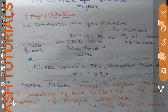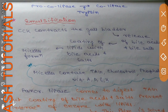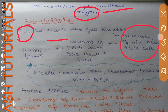Pro-colipase is in inactive form and will be converted into active colipase by the enzyme trypsin. Now, coming to emulsification: cholecystokinin contracts the gallbladder, which releases bile acids and bile salts, which coat the lipid droplets.